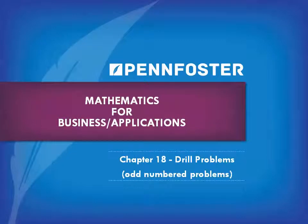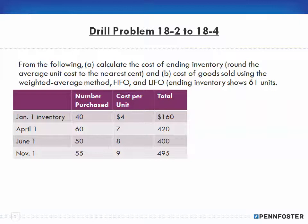All right, welcome back students taking math for business and finance and math applications. We're doing the chapter 18 drill problems — the odd-numbered problems — and we're going to start out with 18-2 through 18-4. Since 18-2 is the weighted average, 18-3 is FIFO, and 18-4 is LIFO, I thought it would behoove us to do all of them. So we have the weighted average, FIFO, and LIFO.